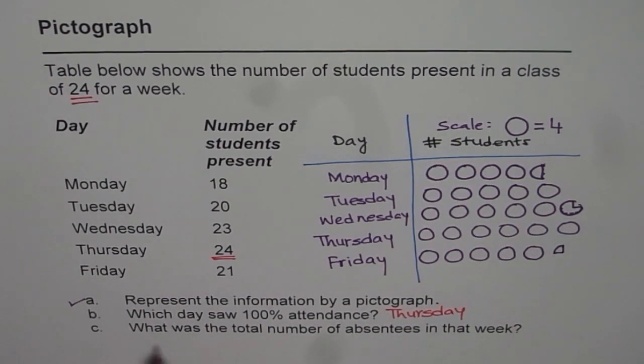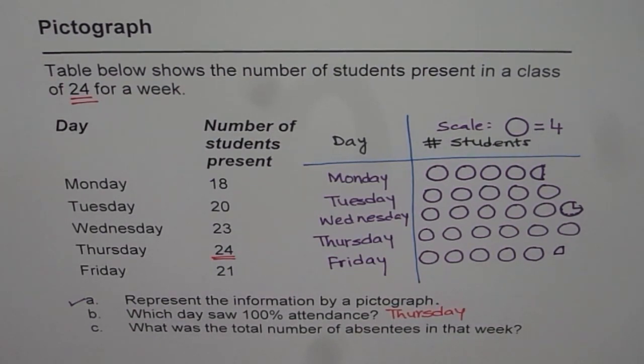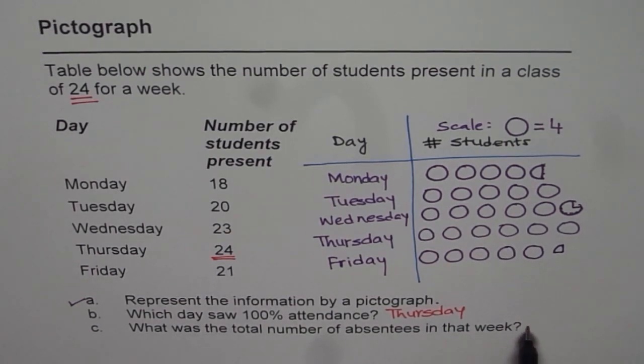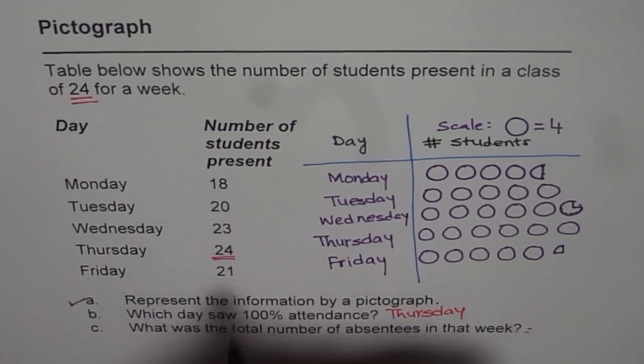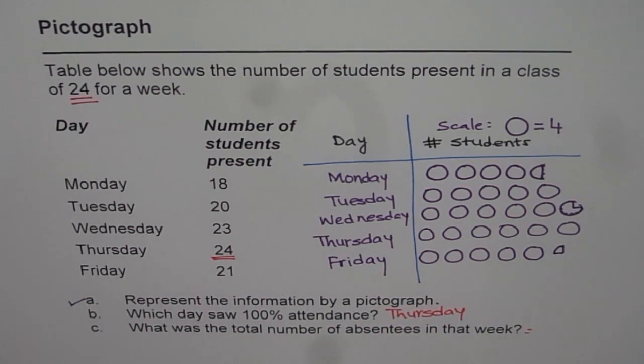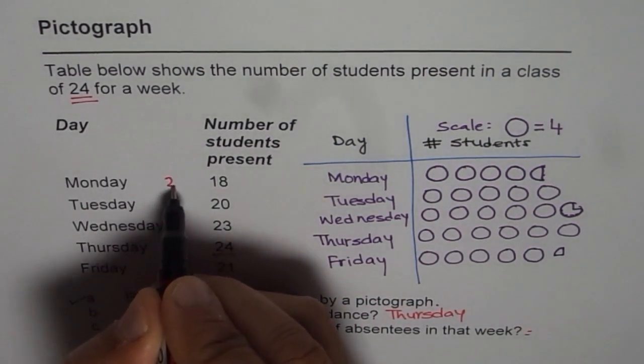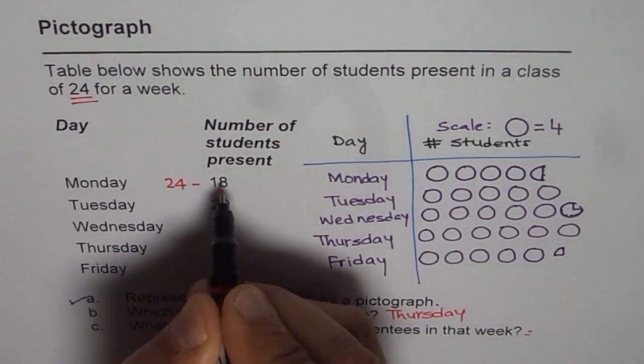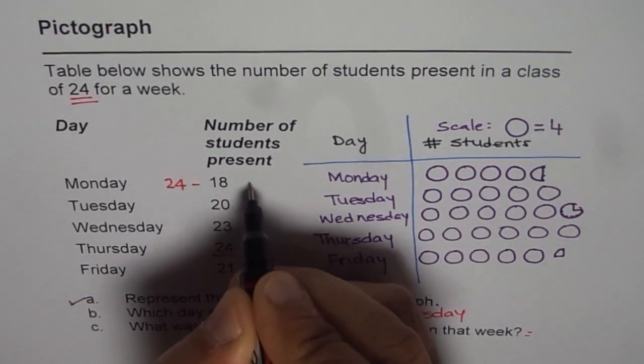The next question is: what was the total number of absentees in that week? So to find the absentees what should we do? Well we have to take away numbers from 24, and make one more table. So I would like you to do this part on your own, and here I will kind of give you an answer. So what I will do is I will take away from 24. So we can say there were 24 students. 24 minus the number will give us absentees.